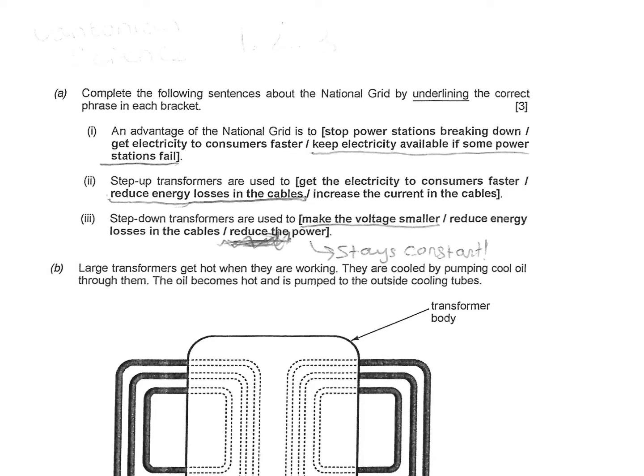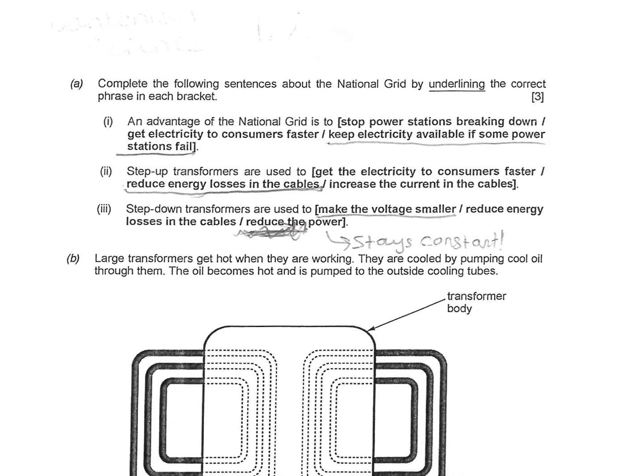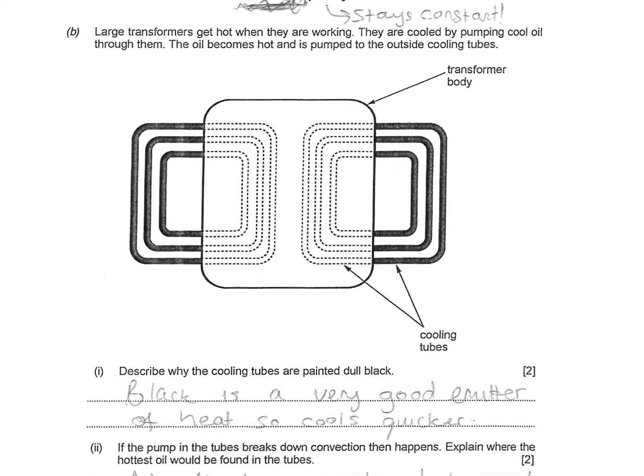These are a series of questions on the national grid and getting electricity to your home. An advantage of the national grid is it keeps electricity available if some power stations fail because it's a big grid that you can get energy off other ones. Step-up transformers are used to reduce energy losses in the cables. Step-down transformers are used to make the voltage smaller. The power stays constant, but the voltage needs to be smaller so you don't get electrocuted.